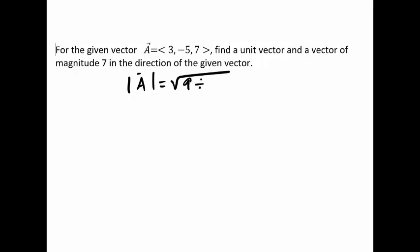...of 3 squared is 9 plus negative 5 squared will give me 25 plus 7 squared is 49. Then you just simplify this. You can keep everything under the radicals so we got square root of 83.